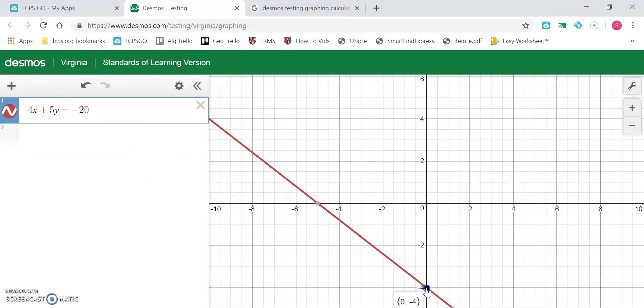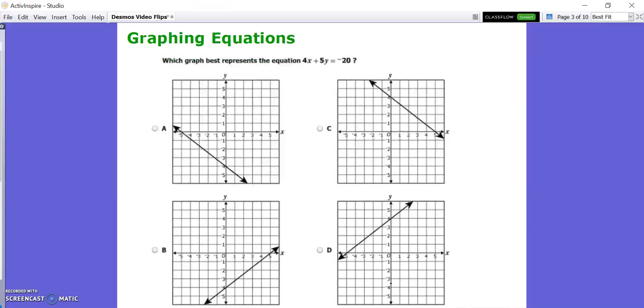It gives you a couple points. If I click on this, it will keep the label on it. So the labels are negative 5, 0 and 0, negative 4. So all I have to do really is find which one has the same points, which would be answer choice A. Super easy.